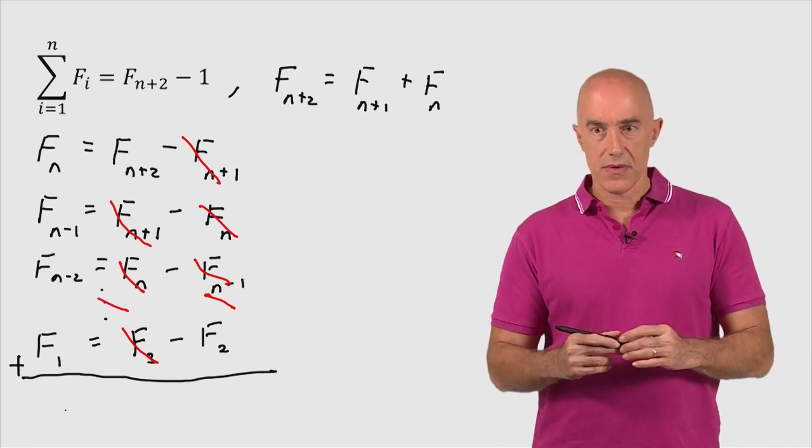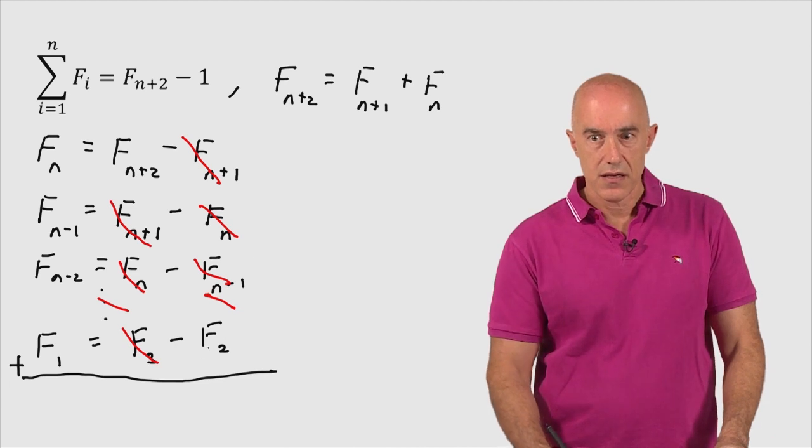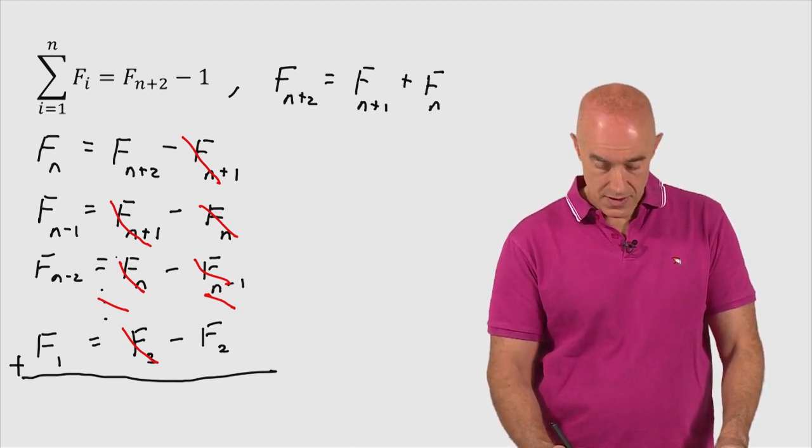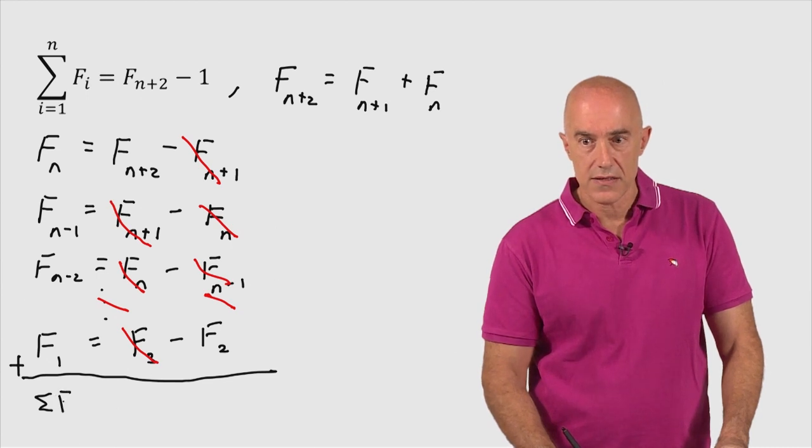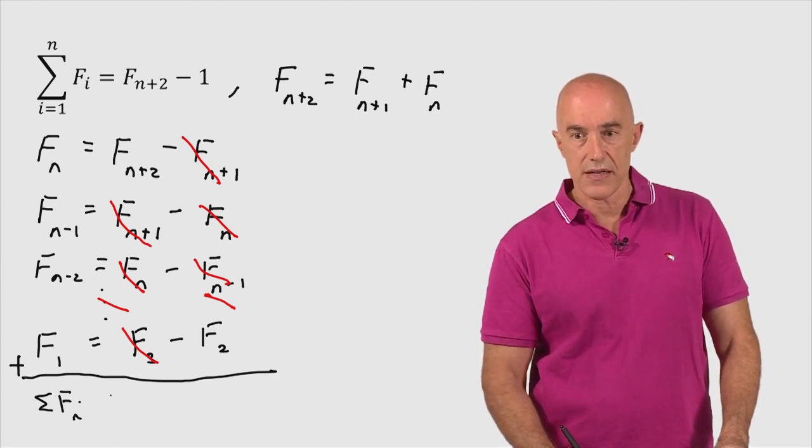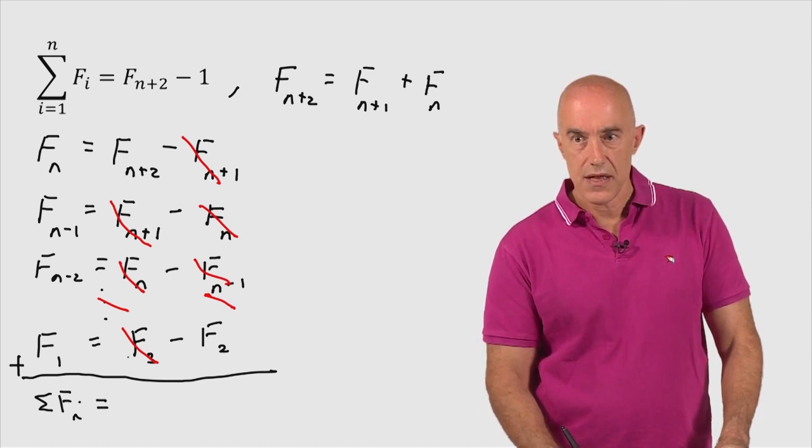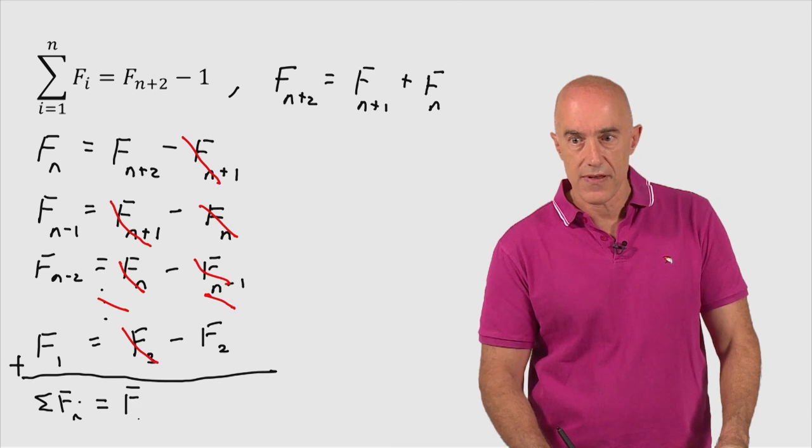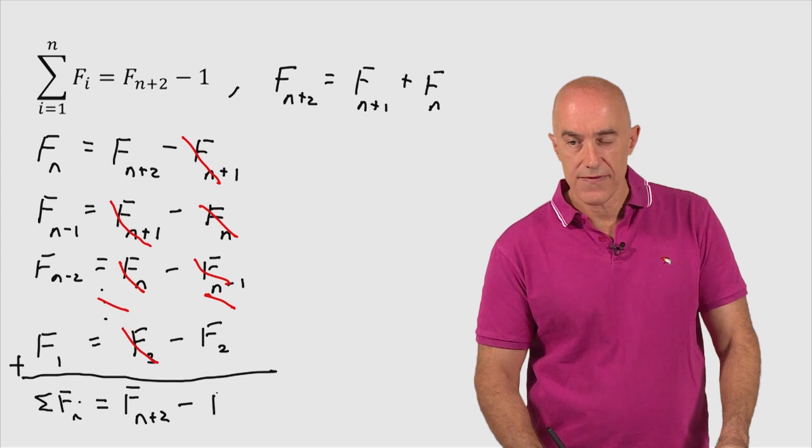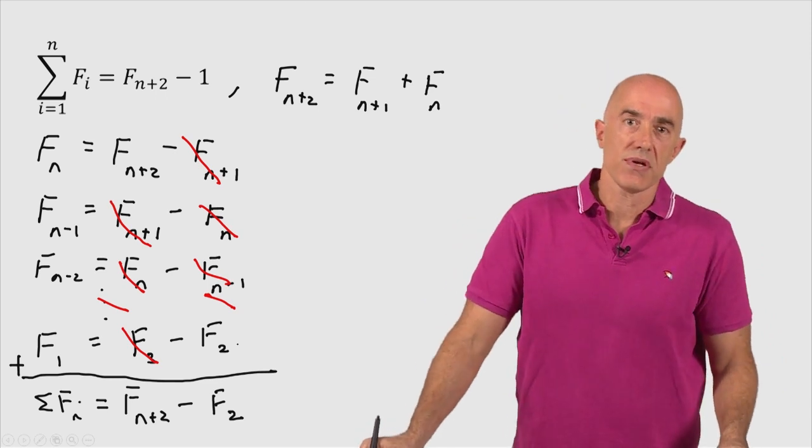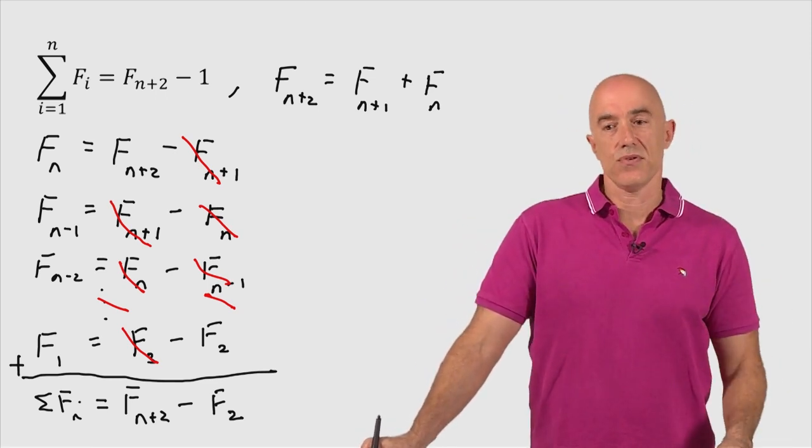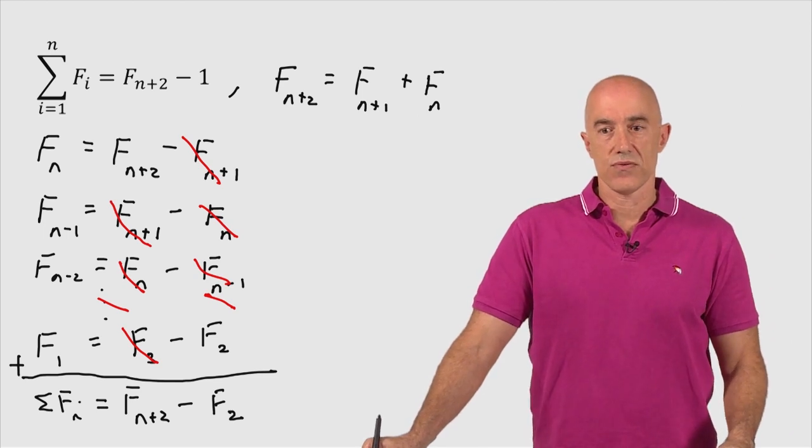So what do we get at the bottom? We get the sum on the left-hand side. We get the sum down here. We get the summation of our F sub i's, right? The sum from i equals 1 to n. Let me not write that. And then we have two pieces left. We have Fn plus 2 minus F2, right? Only two terms remain. The identity says F sub n plus 2 minus 1, but we know F2 is equal to 1, right? F2 is equal to 1.